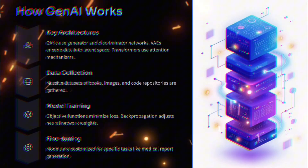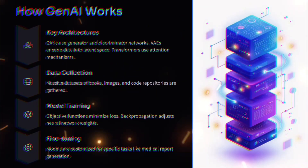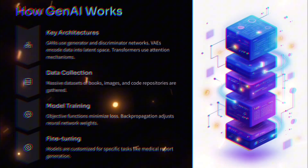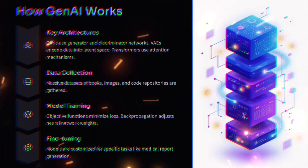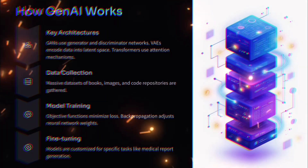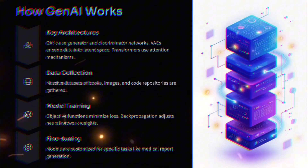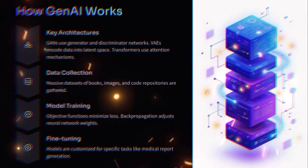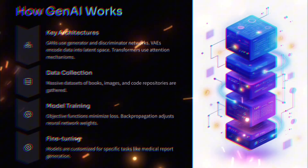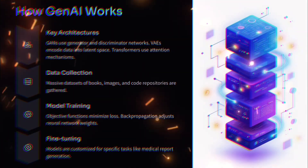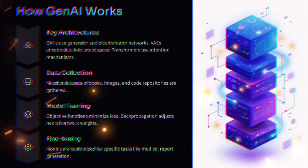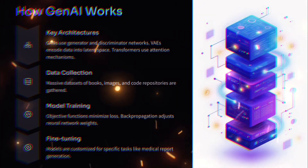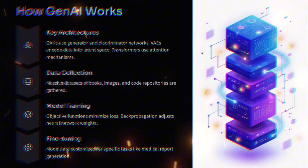How generative AI works: key architectures include GANs, which use a generator and discriminator network that encode data into latent space, and transformers, which use attention mechanisms. Data collection involves gathering massive datasets of books, images, and code repositories.